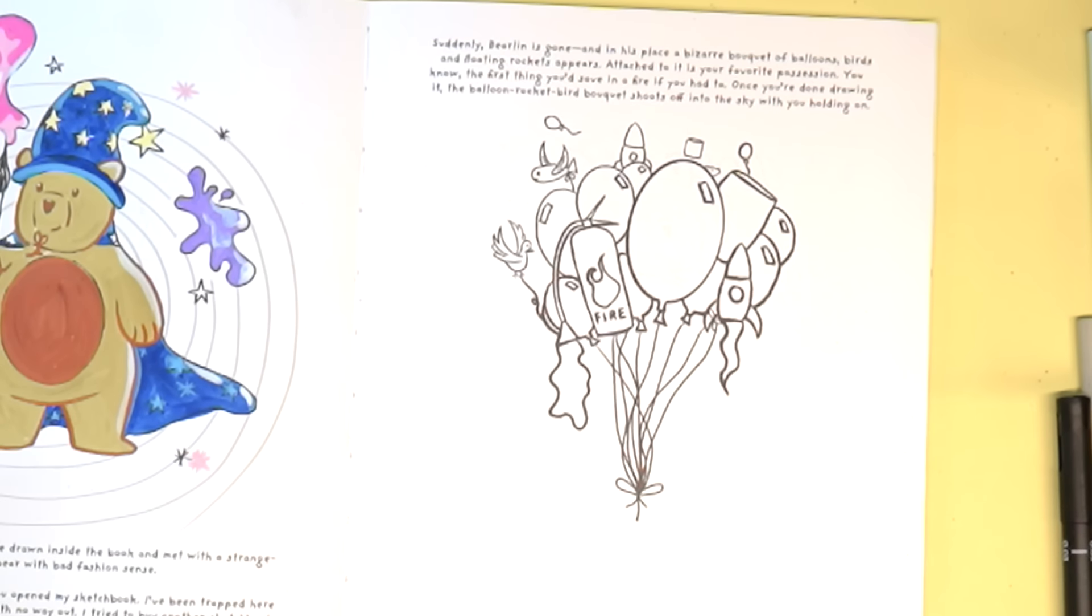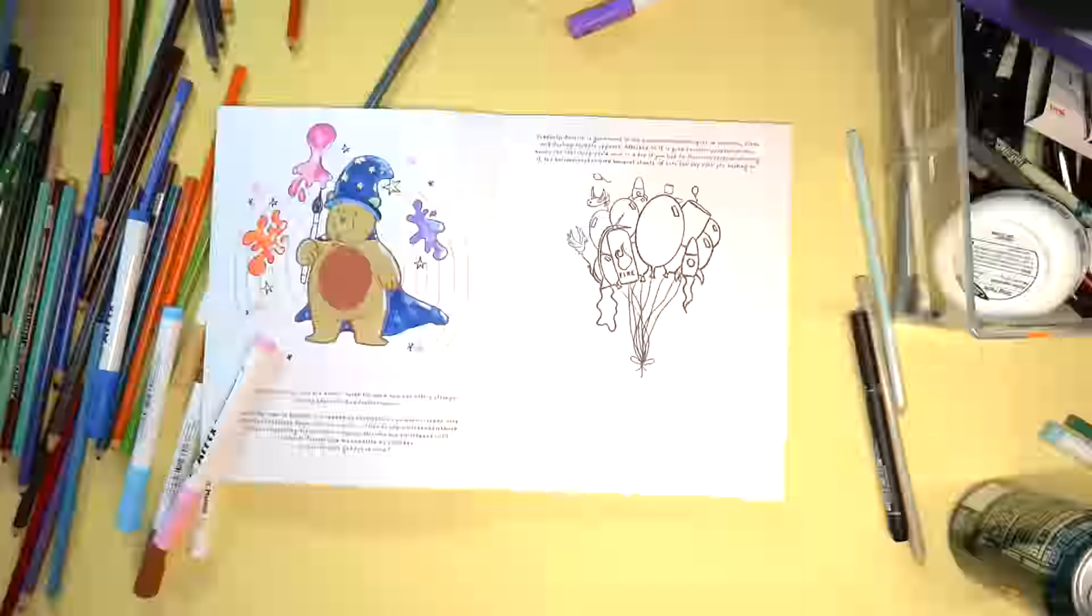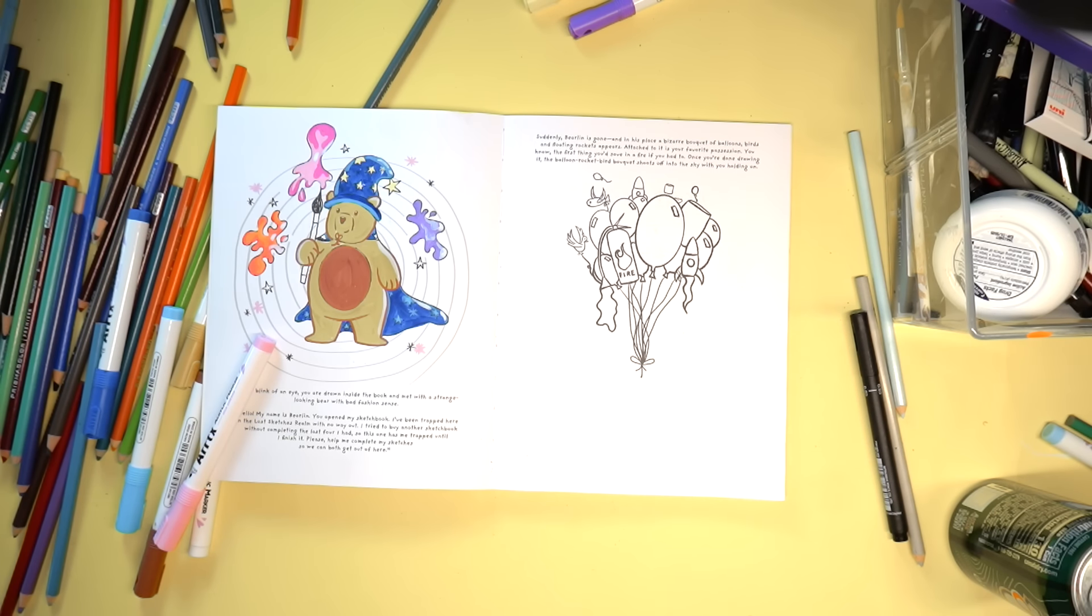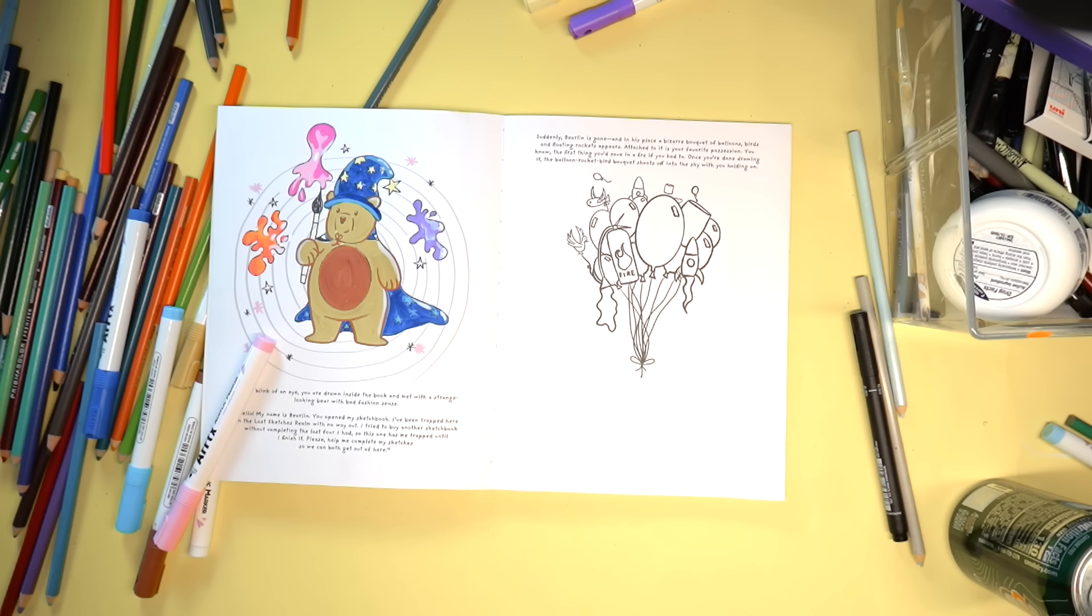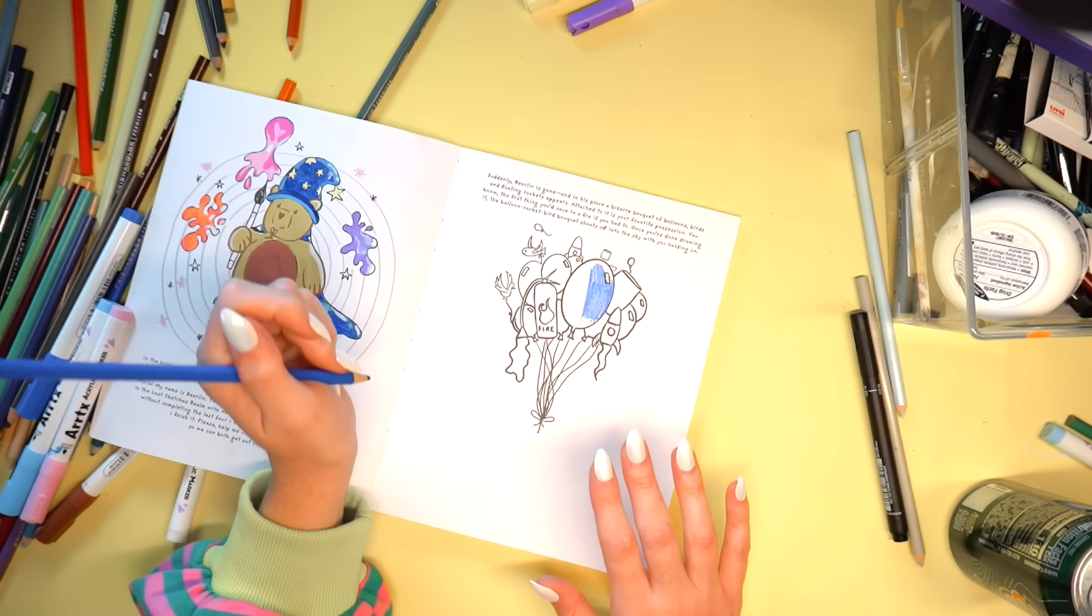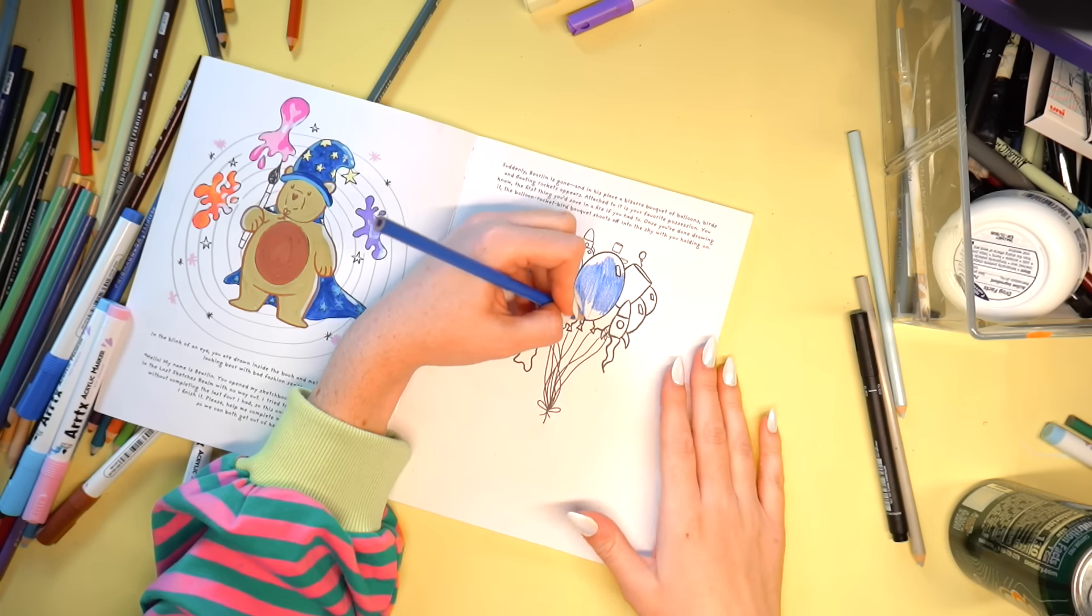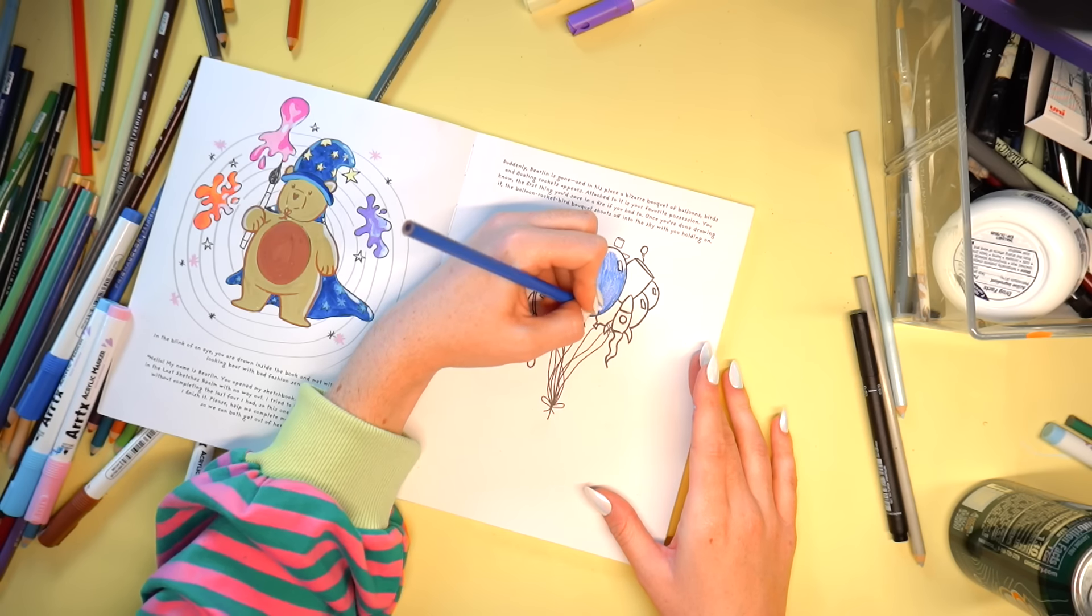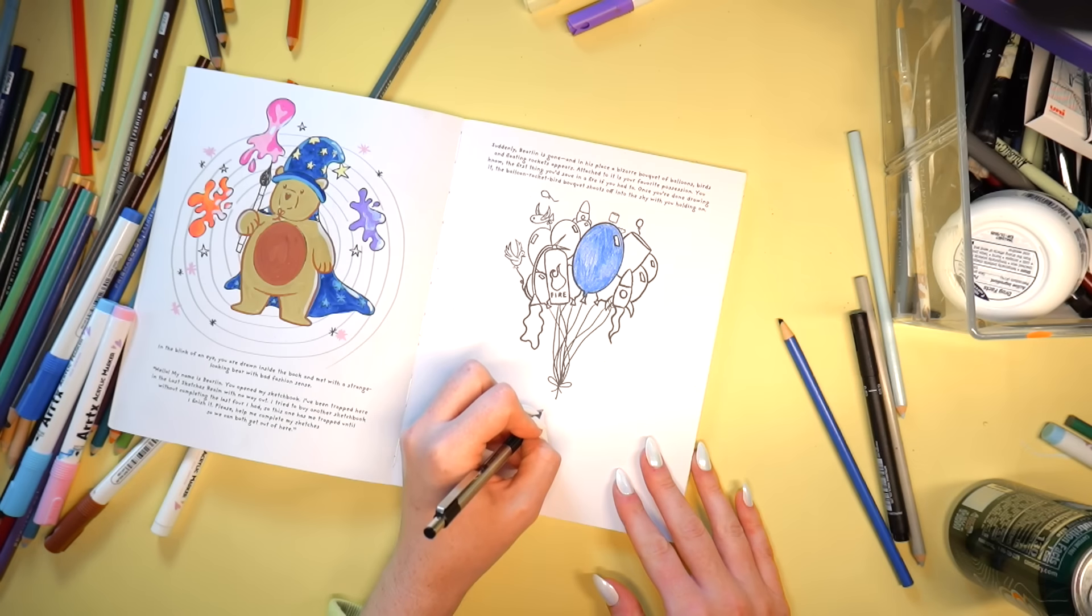Let's move on to our next page. Suddenly, Berlin is gone and in his place, a bizarre bouquet of balloons, birds and floating rockets appears. Attached to it is your favorite possession. You know, the first thing you'd save in a fire if you had to. Once you're done drawing it, the balloon, rocket, bird bouquet shoots off into the sky with you holding it. So what would I save in a fire? I mean, my dogs, but I don't think you can really call those objects or possessions. To be honest, if we're not counting like people and animals here, I know what I'd save. Everything that I own can be replaced or is backed up somewhere. The one thing I can't replace is my little white bunny rabbit that my mum gave me when I was little.